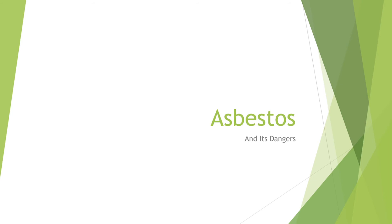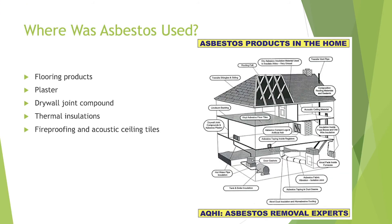Asbestos is the big name in particulates getting into the lung. Asbestos is a naturally occurring mineral used in many residential and commercial building materials from the 1950s up until the 1990s because of its strong fibers and resistance to fire. When asbestos is disturbed during renovations, tiny asbestos fibers are released into the air and inhaled. Asbestos fibers can get trapped in the lungs and cause serious health problems such as asbestosis.